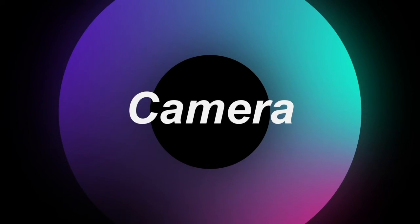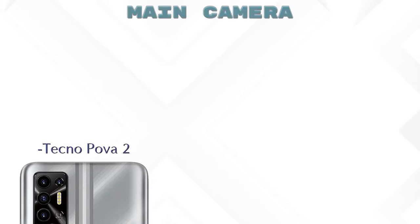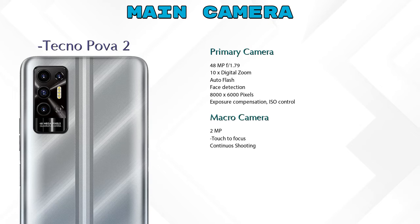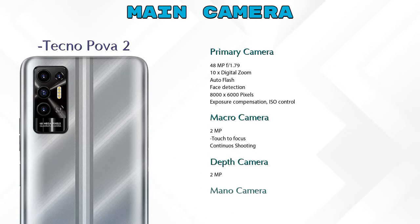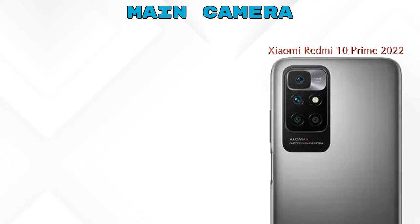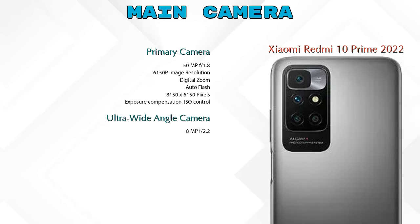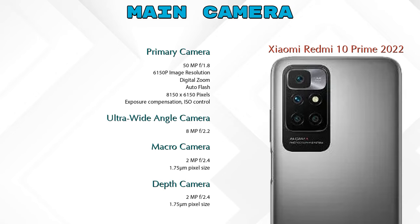Now let's talk about our favorite feature — the camera. For the rear camera, the Tecno Pova 2 has 4 cameras: a primary camera, macro camera, depth camera, and mono camera. The Redmi 10 Prime 2022 also has 4 cameras: a primary camera, ultra-wide angle camera, macro camera, and depth camera.